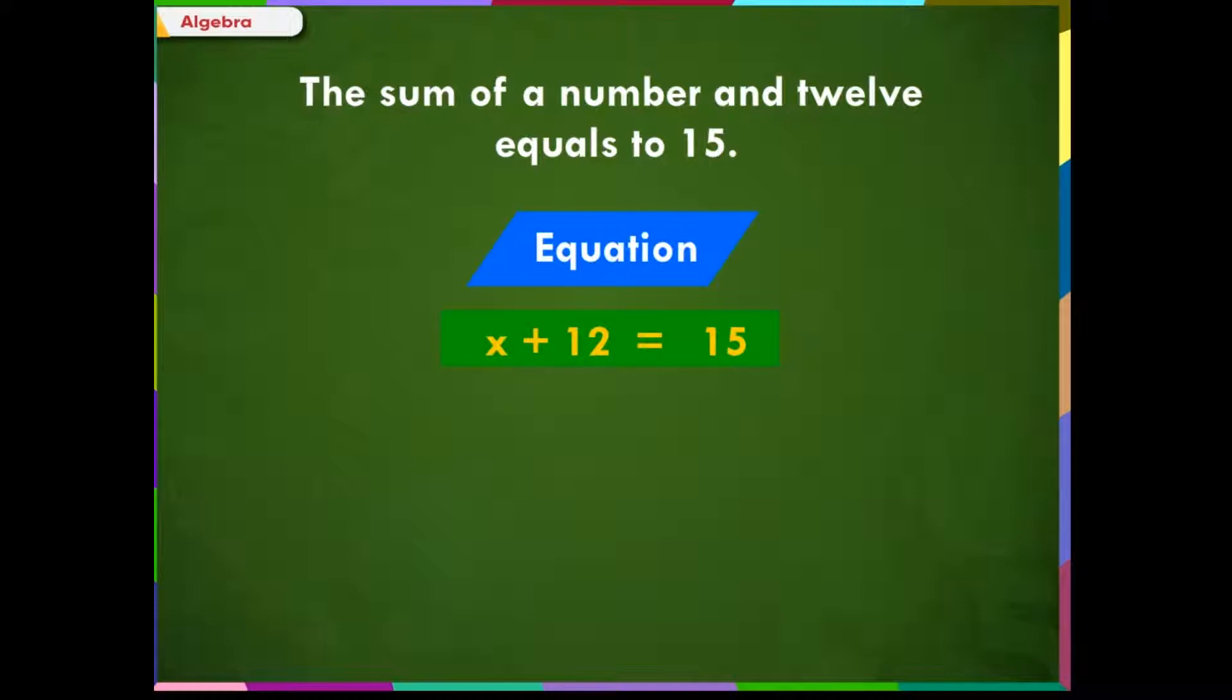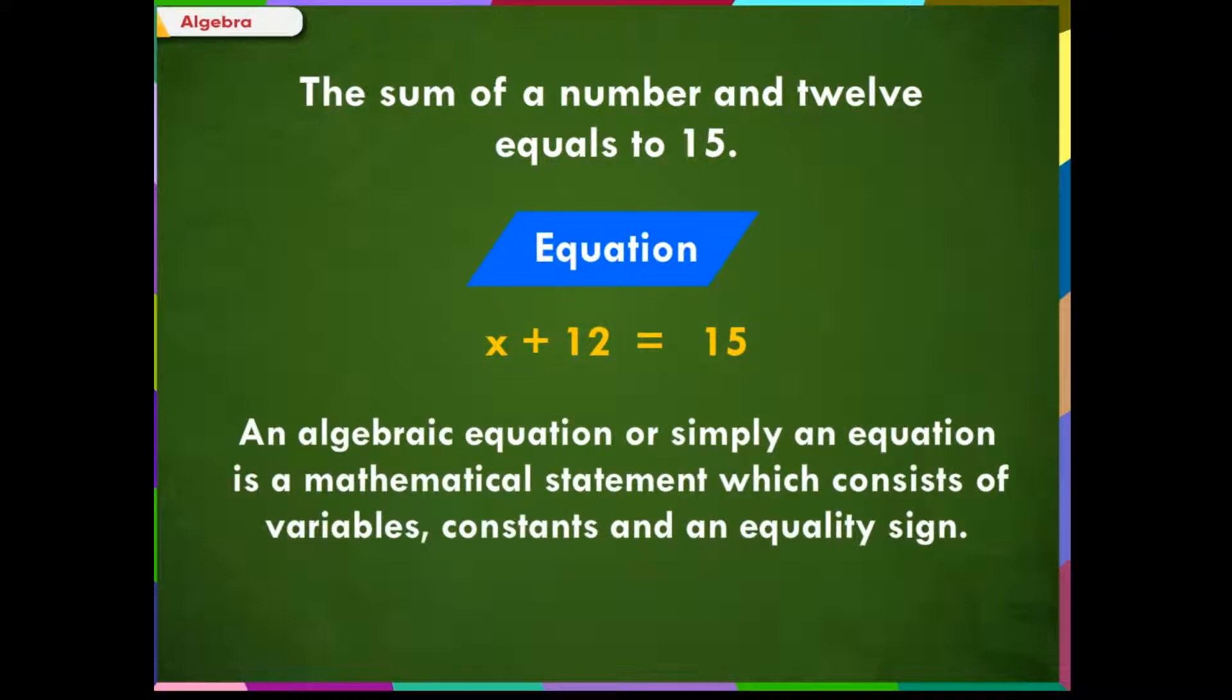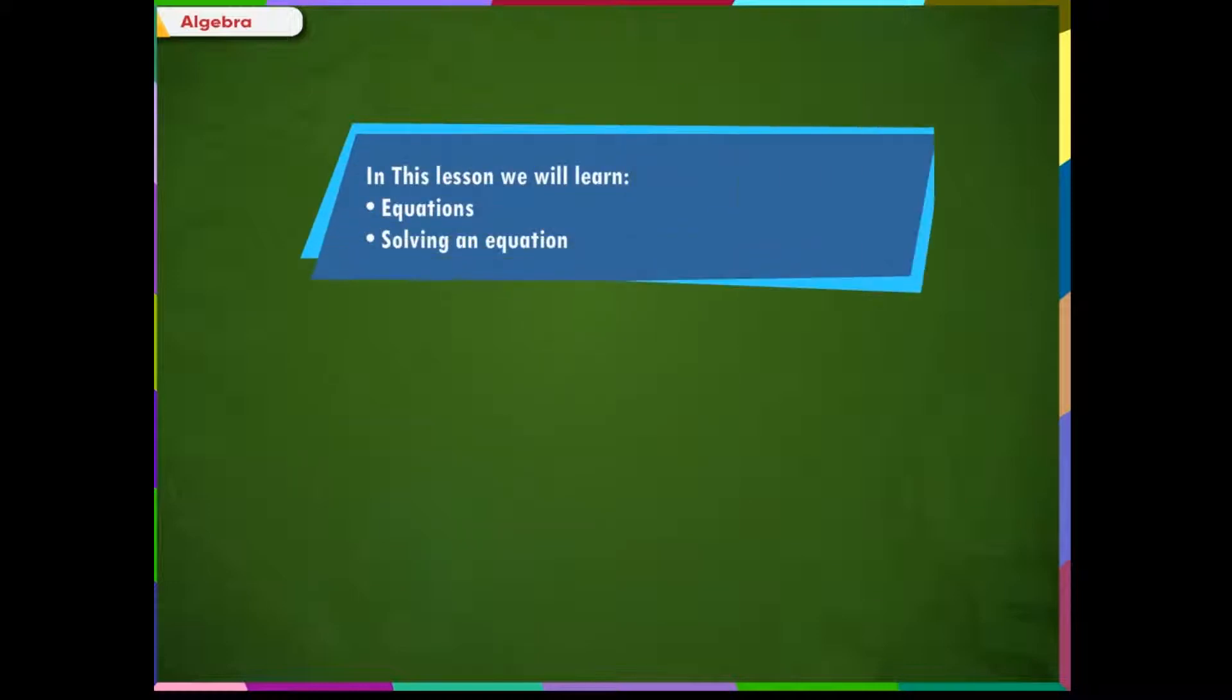We call such a statement an algebraic equation as there is an equal to sign here. An algebraic equation, or simply an equation, is a mathematical statement which consists of variables, constants, and an equality sign. In this lesson we will study about equations in more detail and solving an equation.